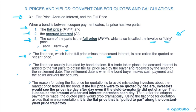The settlement date is when the bond buyer makes the cash payment and the seller delivers the security. The reason for using the flat price for quotation is to avoid misleading investors about the market price trend for the bond. If the full price were quoted, investors would see the price rise day after day even if the yield to maturity did not change, because the amount of accrued interest increases each day. Then after the coupon payment is made, the quoted price would drop dramatically. Using the flat price avoids that misrepresentation.